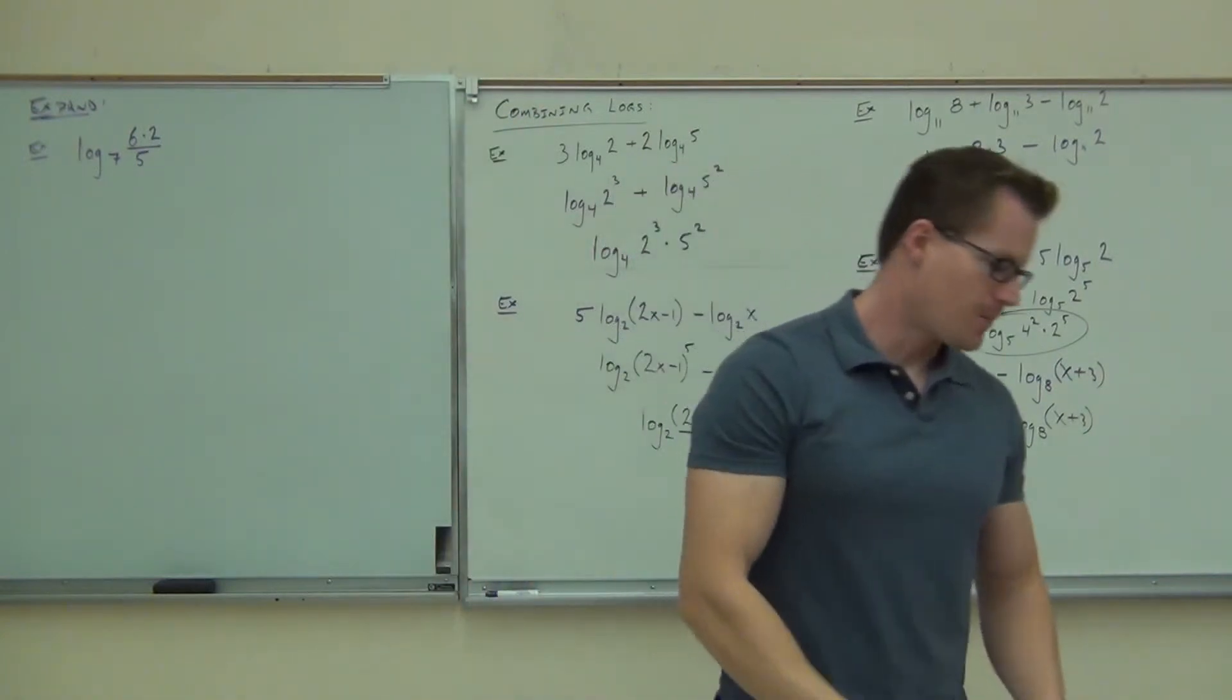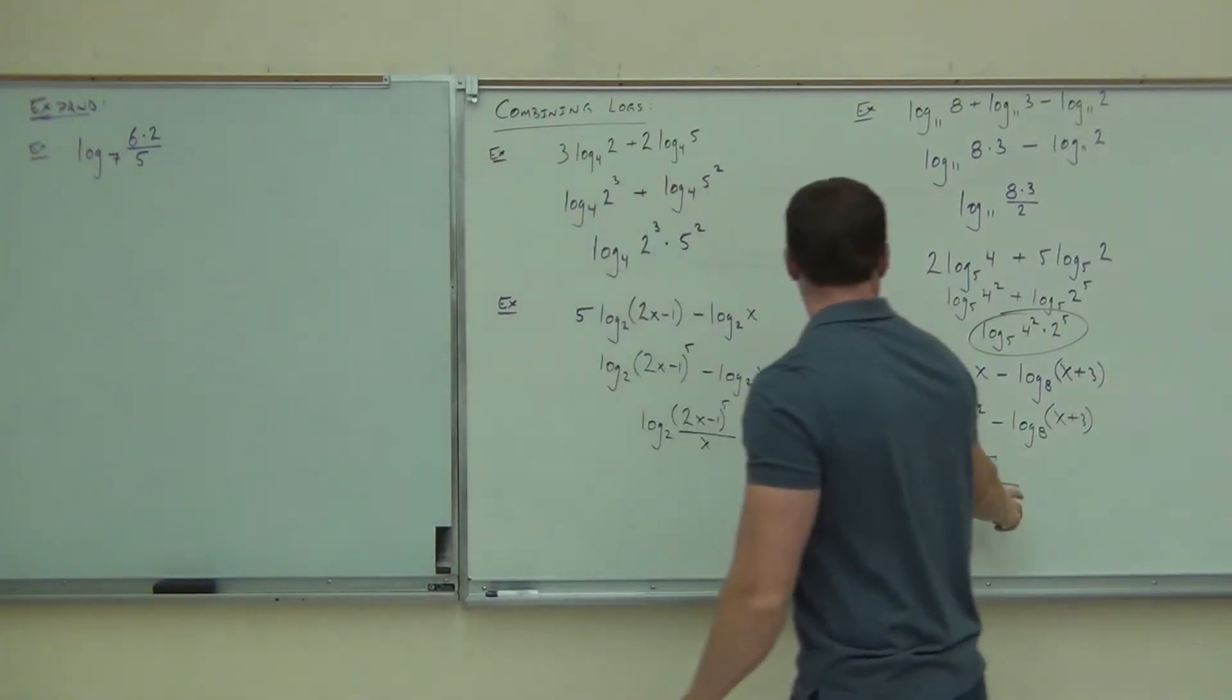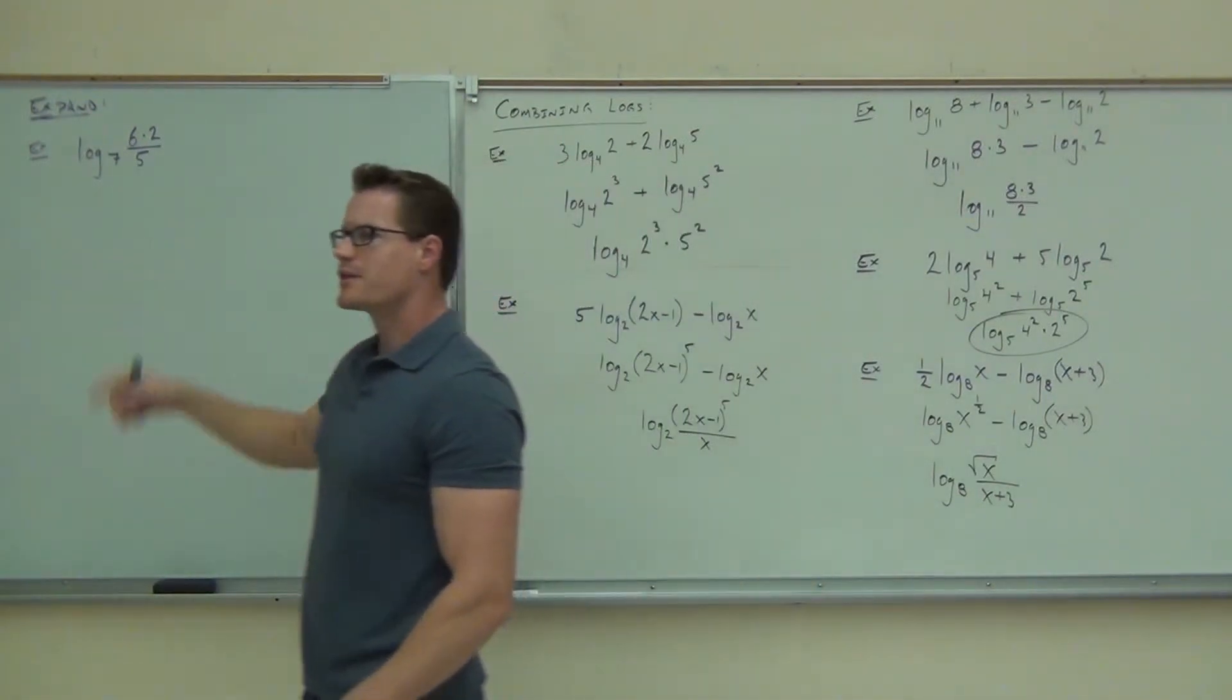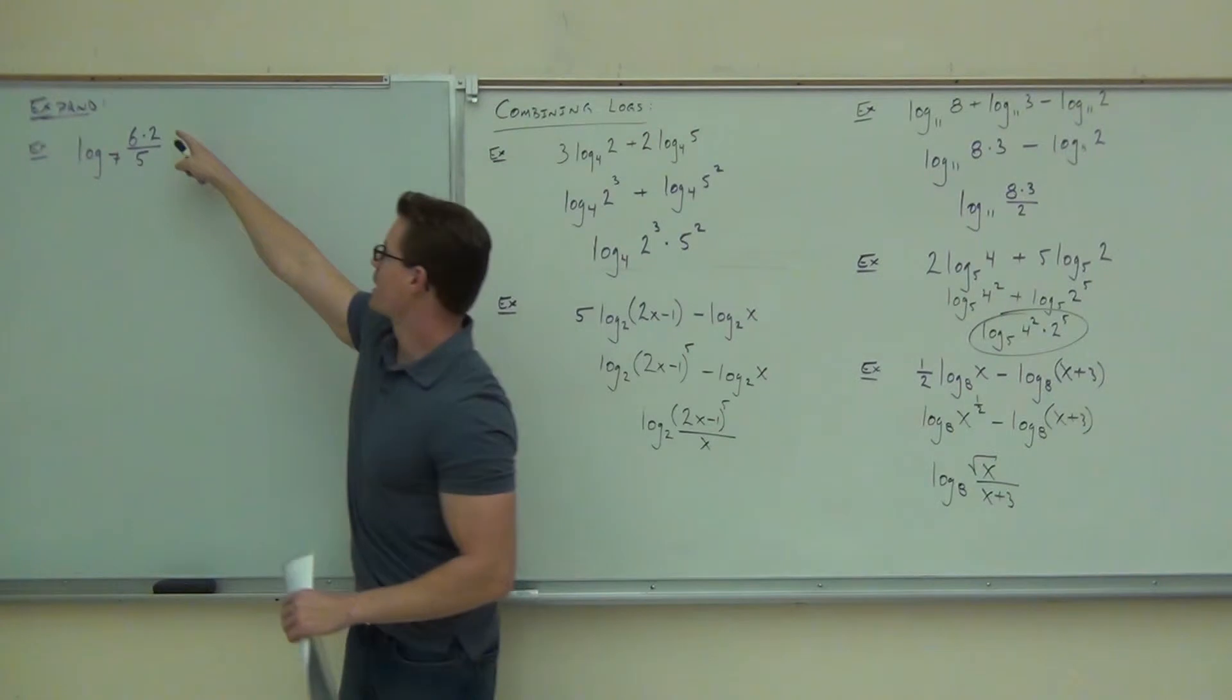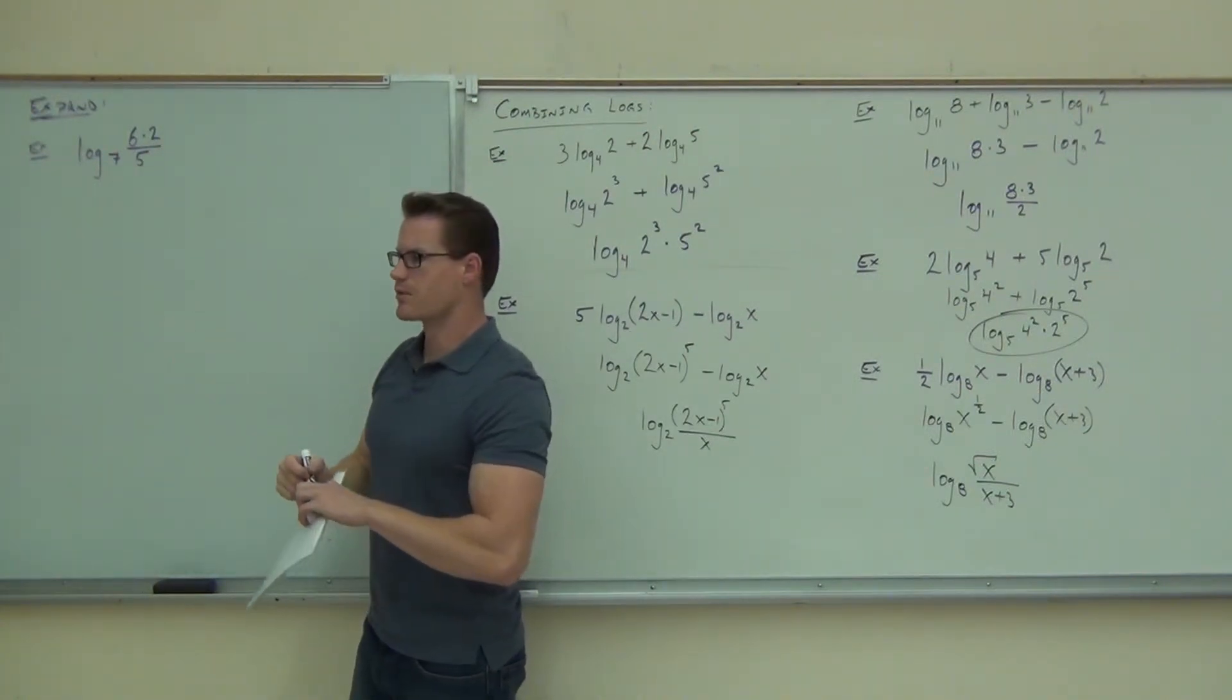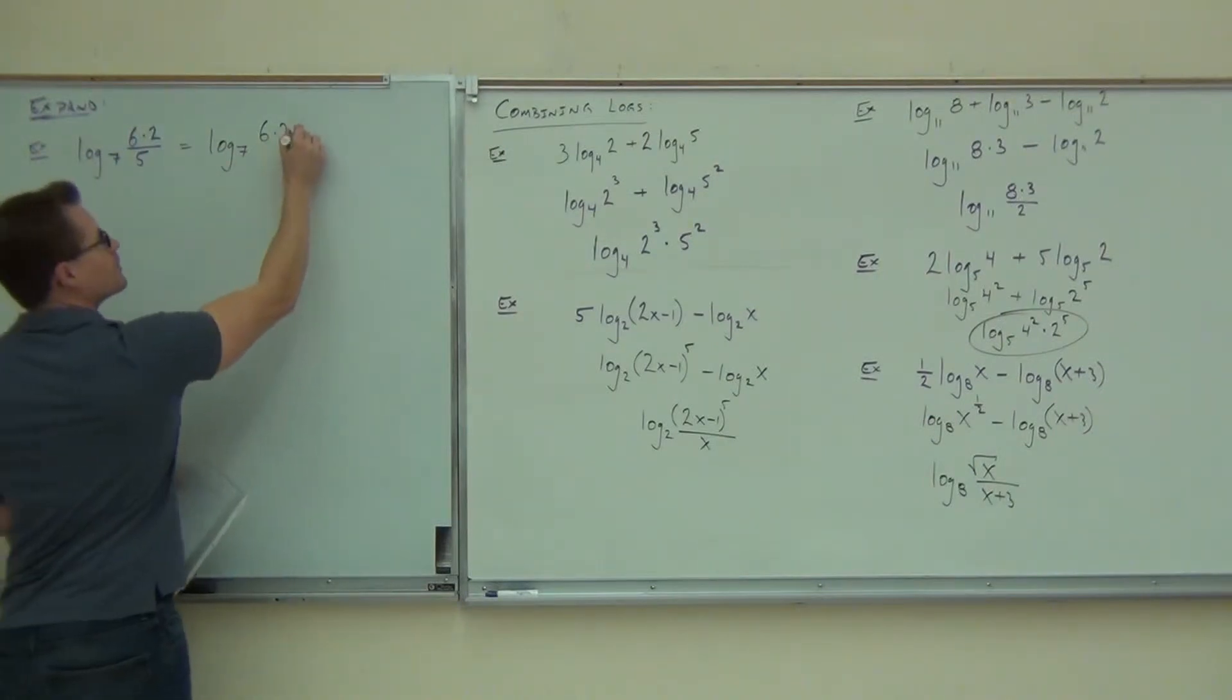Now the last thing we're going to talk about is expanding logarithms. You also need to go backwards. Be able to take these things and make them into those. Be able to take this and make it look like that. Expand it as much as possible. Let's practice that here. Do you see some things that we can expand? Can you expand a quotient? Work from the outside in. So the first thing I'm seeing here is a quotient. So I know that this is going to be log base 7 of 6 times 2. Is it going to be over log base 7 of 5 or minus? Minus log base 7. Very good.